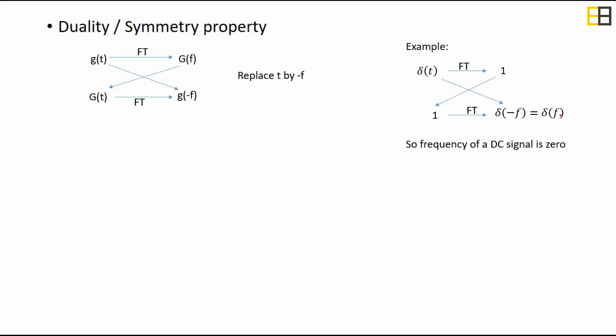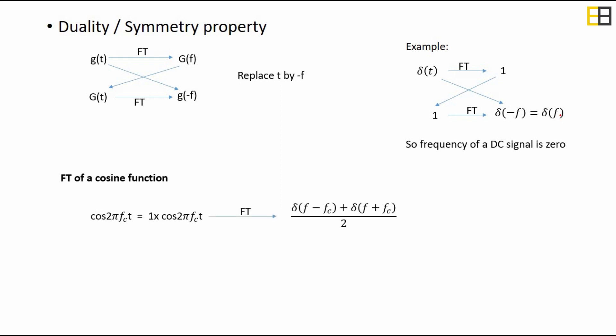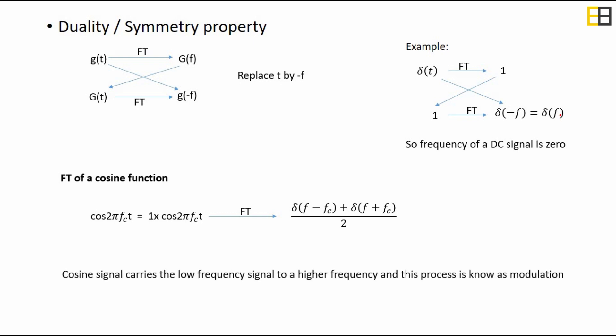One of the most important things in communication is the cosine function. The Fourier transform of cos(2πfc·t) can be obtained as follows: cos(2πfc·t) is the same as 1 multiplied by cos(2πfc·t). By using the modulation property, when we take the Fourier transform we get shifted impulses with half the amplitude. This result confirms that the cosine signal carries the low frequency signal to a higher frequency, and this process is simply known as modulation. This concludes the introduction part of analog communication.